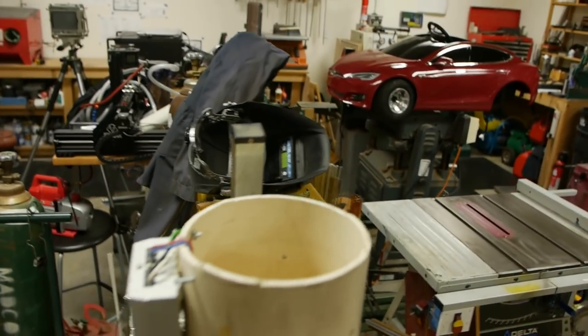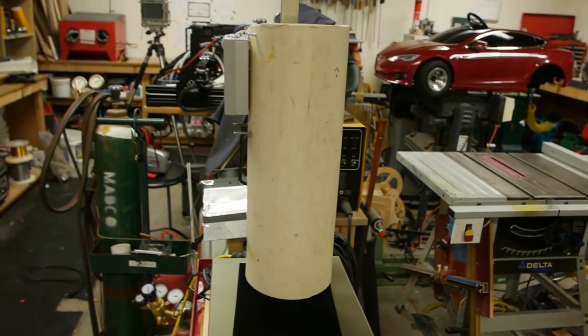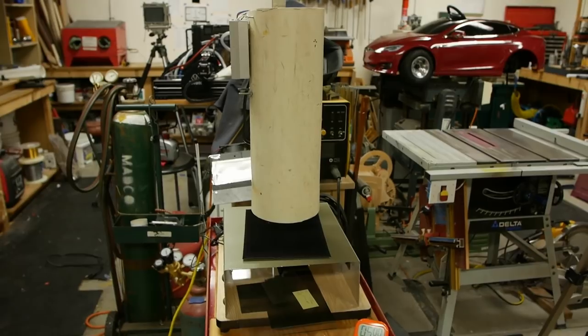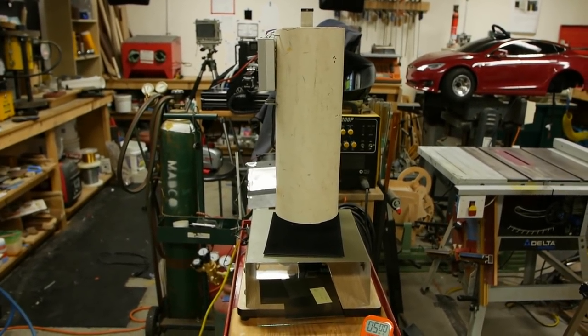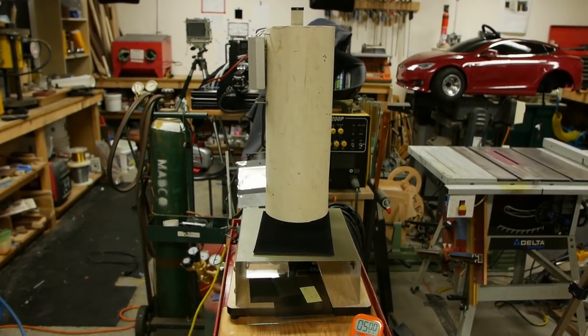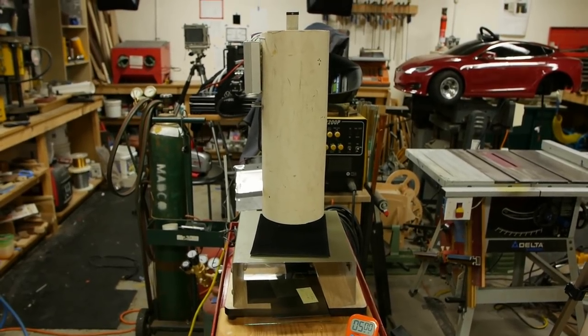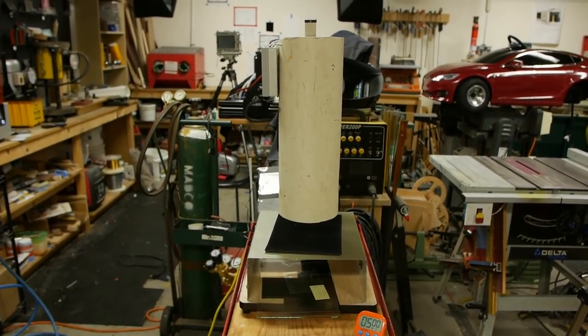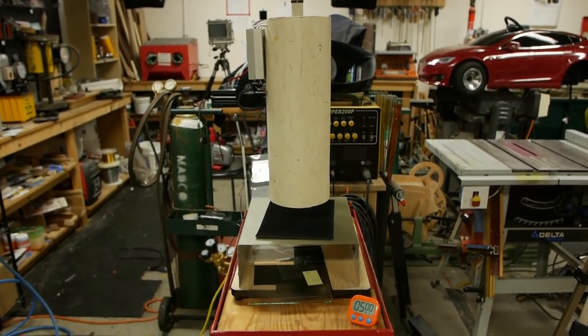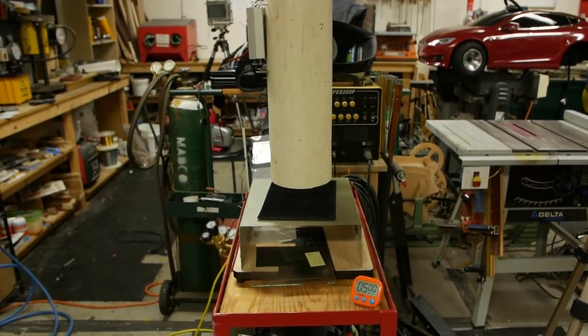So inside this pipe, there is a 70 watt metal halide lamp. And the idea is that the arc, it's an arc lamp, and the arc is sort of like a point source. So just getting that arc source far away from the film, even without optics, produces a pretty good set of collimated light.